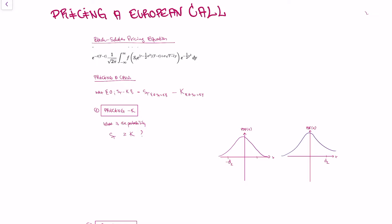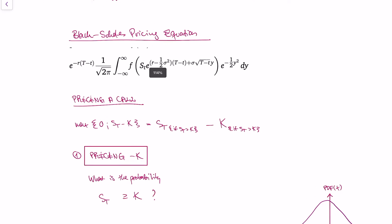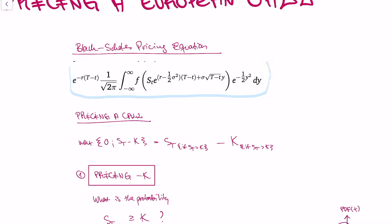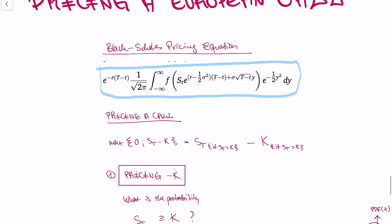Today we're going to use the Black-Scholes model to actually price a derivative, namely a European call on an Apple share. Let's review what we have done so far. This is the important equation we derived in the last videos — the Black-Scholes pricing equation. We used risk-neutral pricing and said that the price of any derivative in the Black-Scholes model is given by the integral of the standard normal distribution multiplied with the derivative function f, which depends on how the underlying asset evolves. We want to use this equation to price a call option.